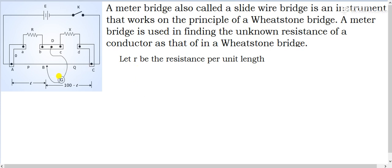In the working of the meter bridge, you slide the jockey starting from point A. The galvanometer detects the flow of current. You slide the jockey until the galvanometer shows no deflection — that is the balancing principle. When the galvanometer shows no deflection, the bridge is balanced. Suppose point B is where the galvanometer shows no deflection.